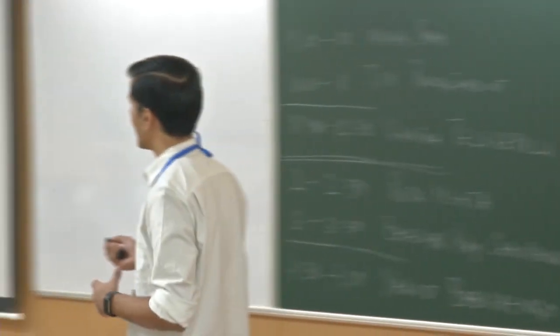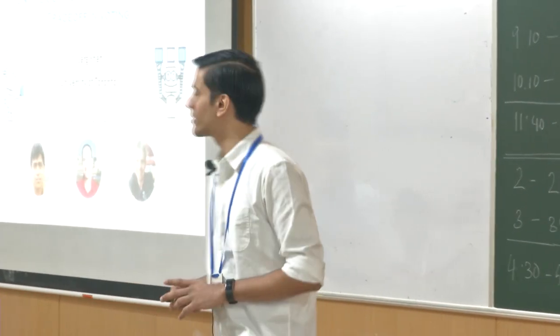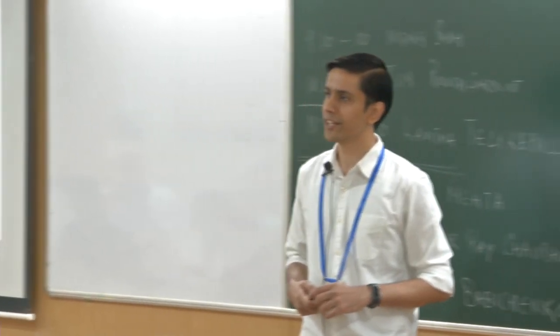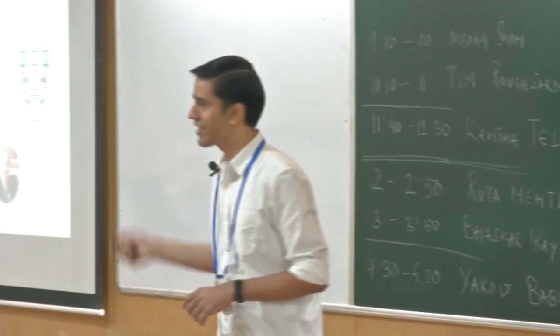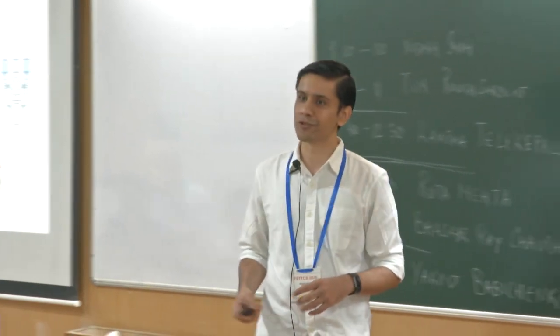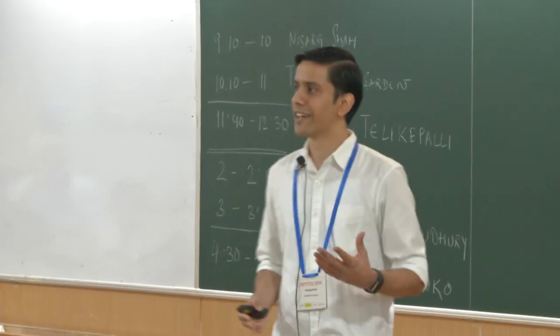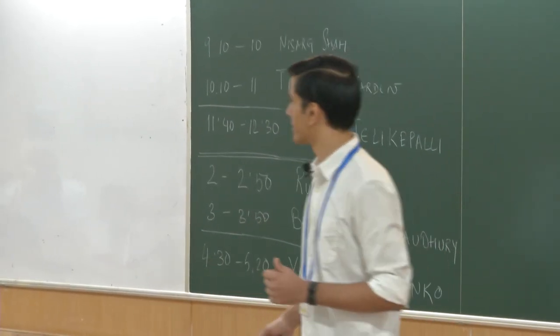The topic I am going to talk about is Communication-Distortion Trade-off in Voting. As you can see from the title, this is going to be about communication complexity and its application to voting theory.